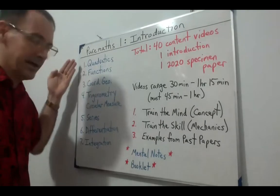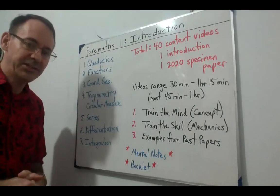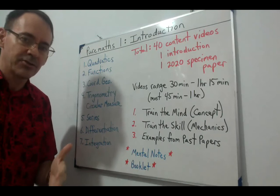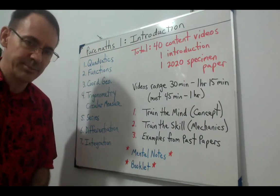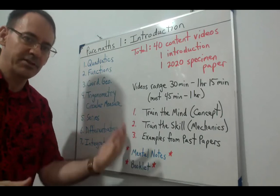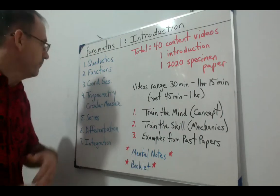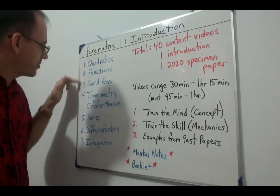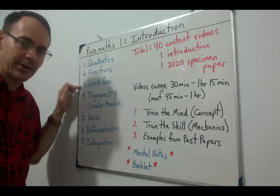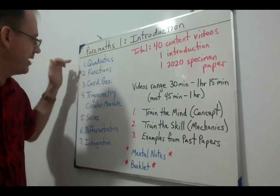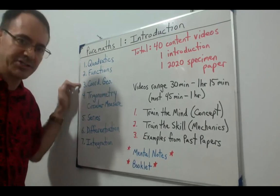Here is what I do. The book has nine chapters. I do like the way the book organizes the material. It's a little bit better than the previous series. And so in my first three units I follow exactly as the book has it: Quadratics, Functions, and Coordinate Geometry.